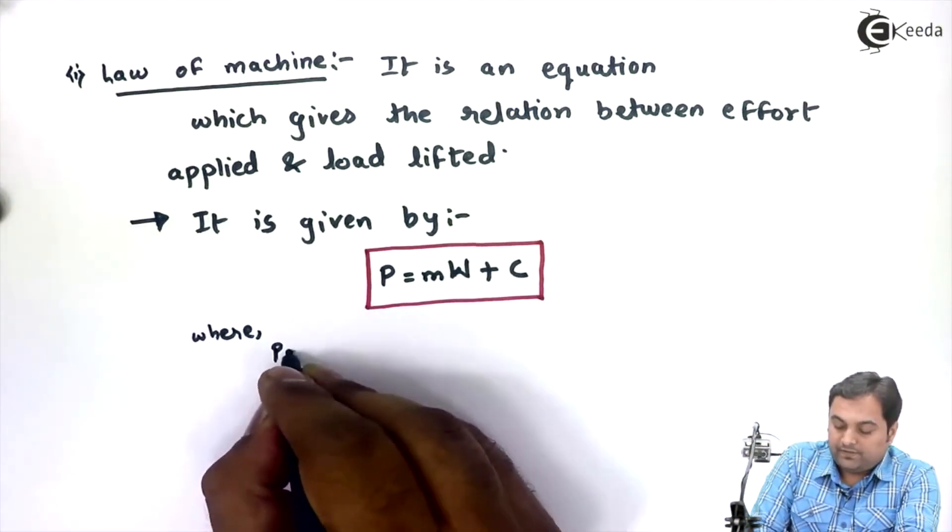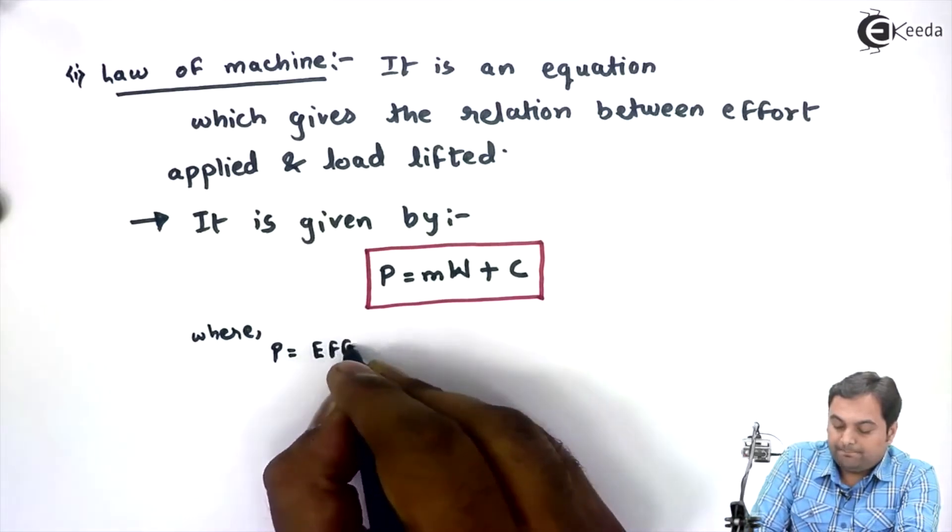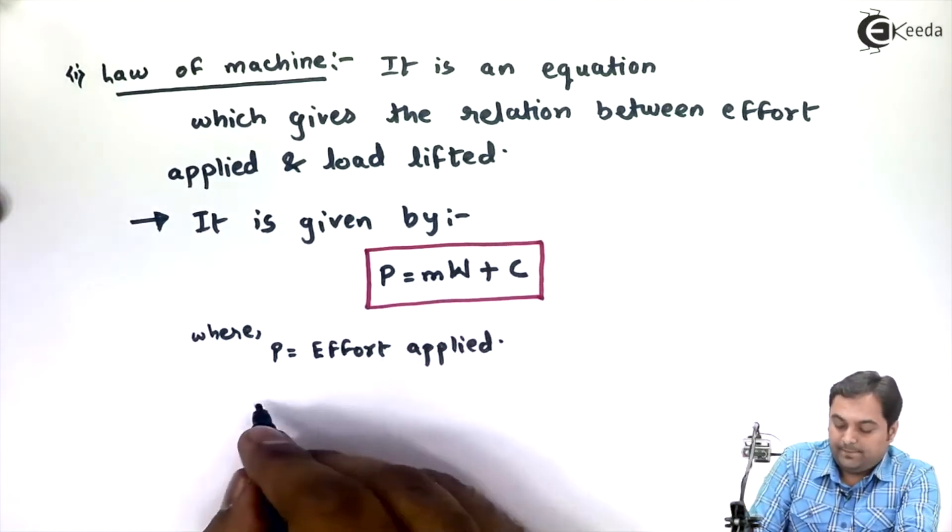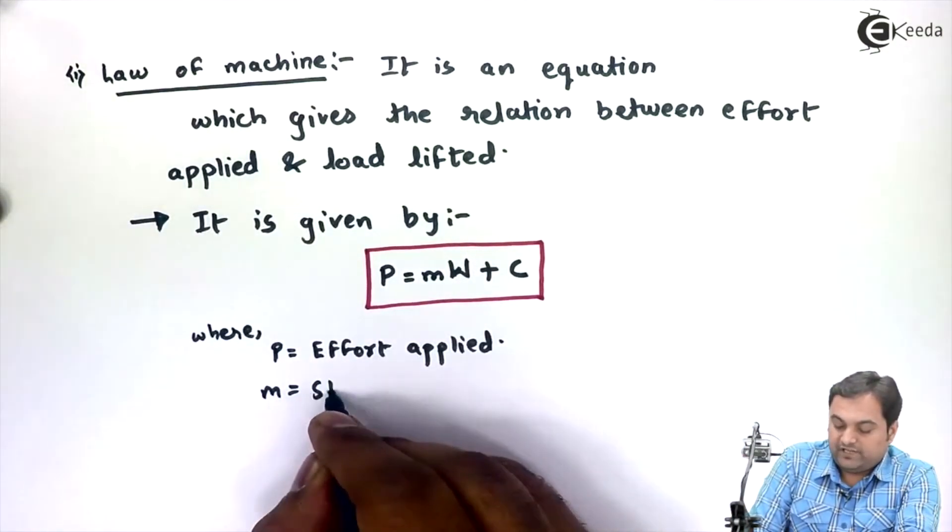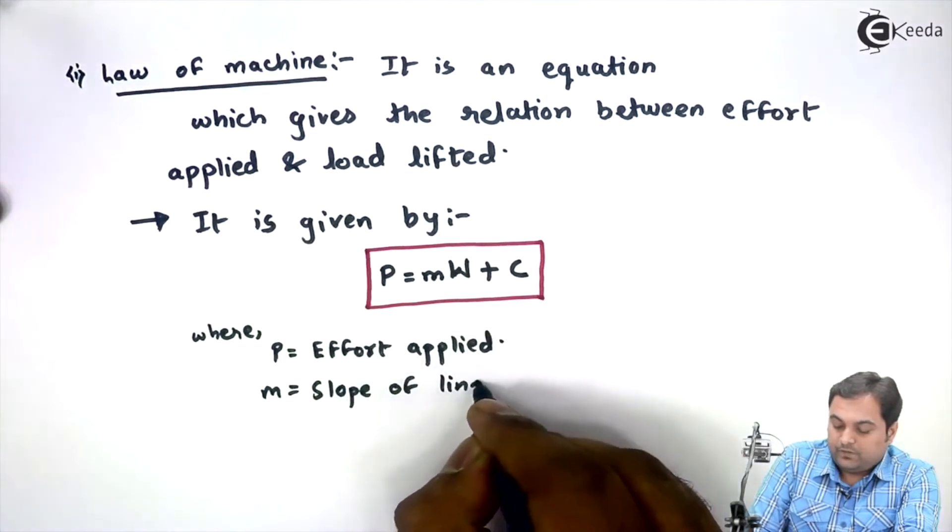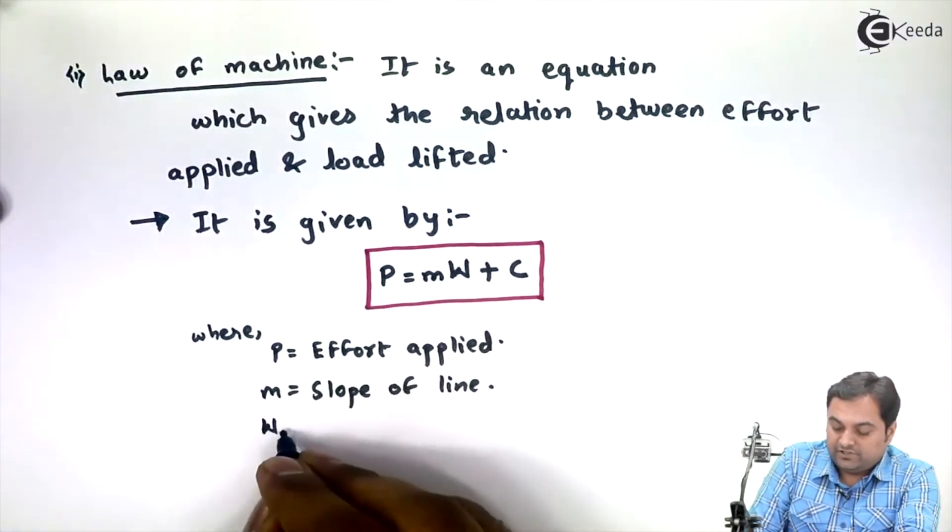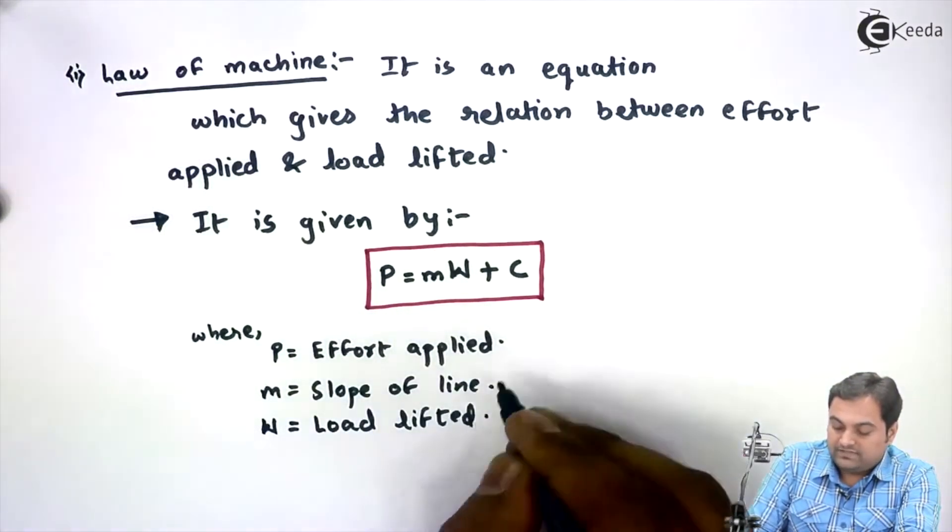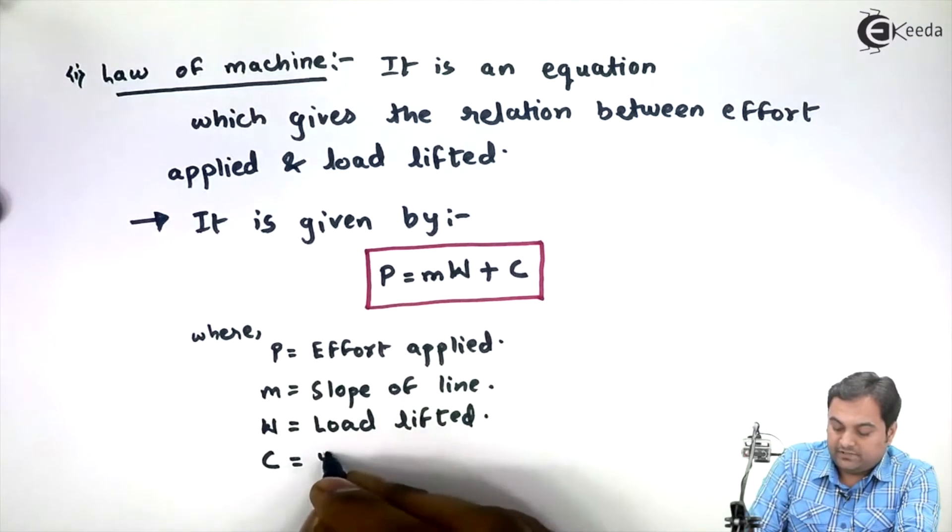Where P is equal to effort applied, M is the slope of line, W is the load which is lifted, and C is called as y-intercept.